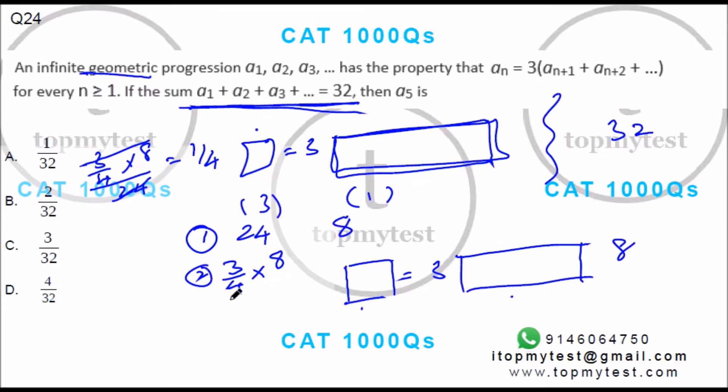If you want to resolve this, the second term is 6. Each term is 1/4 of the previous term. We need to find a5. So a3 will be 1/4 of 6, which is 3/2.